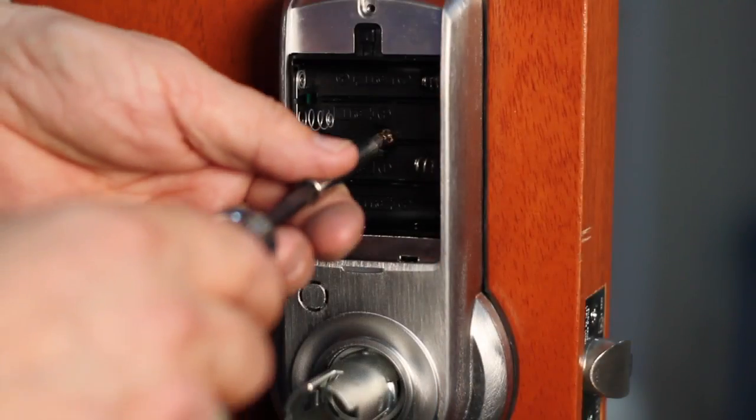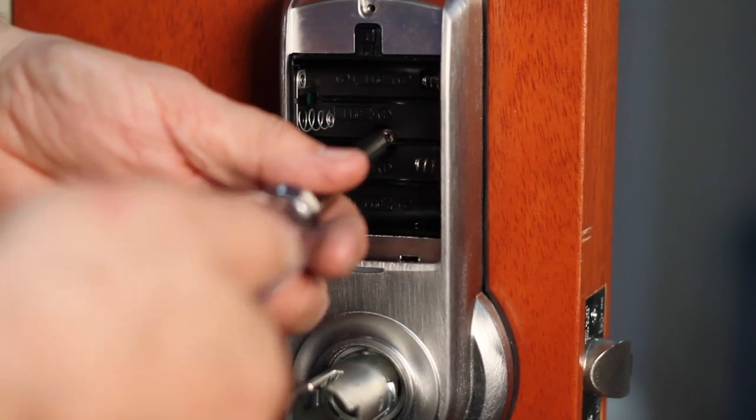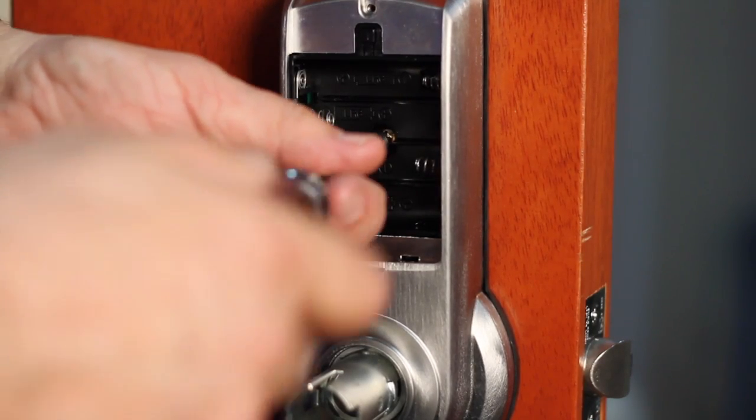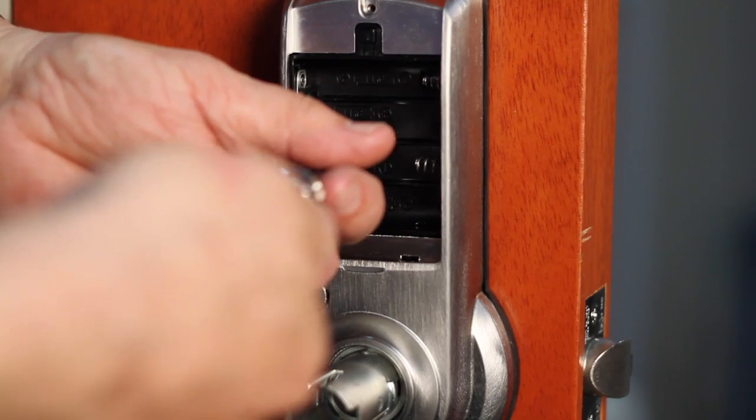Once the wires are connected, install and secure the number 10 32 by 3 1⁄4-inch pan head screw through the center of the battery housing into the barrel nut of the outside assembly.